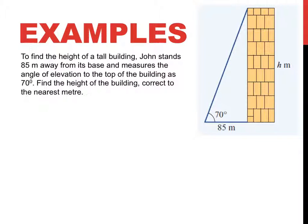So for example, this is one type of question that you might be asked. To find the height of a tall building, John stands 85 metres away from its base and measures the angle of elevation to the top of the building is 70 degrees. Find the height of the building correct to the nearest metre. Now, technically, if I'm looking at the picture, I kind of already know how to do this. But the thing is guys, mainly most of the time you don't get the picture. So I'm being nice and giving you the picture this time.